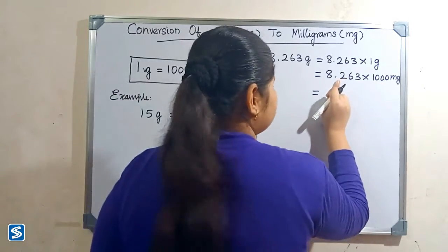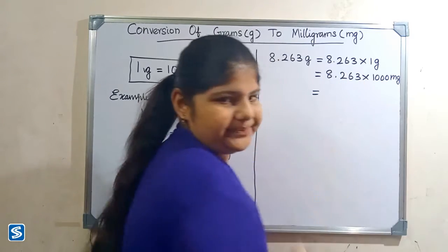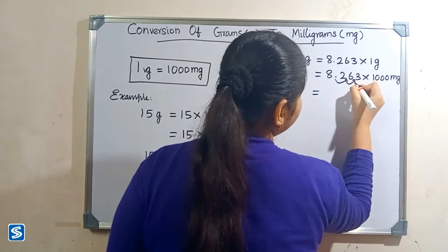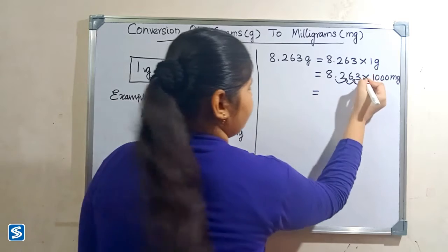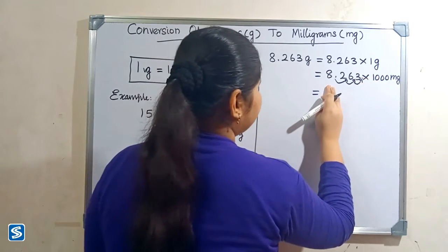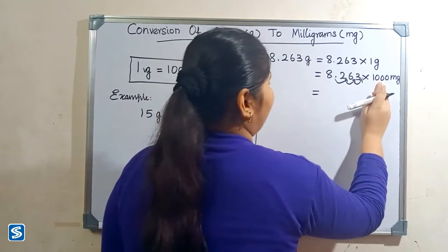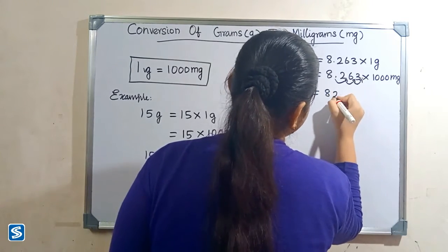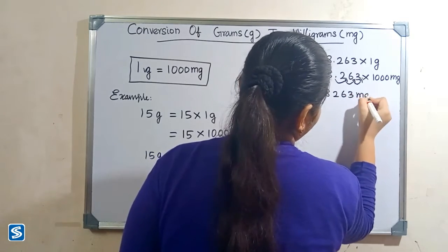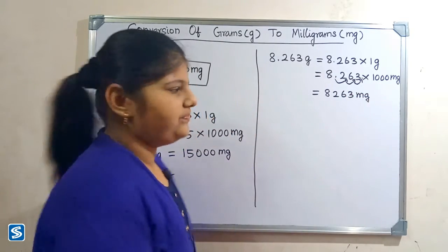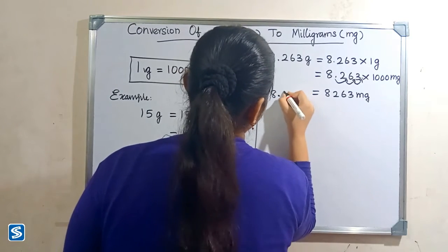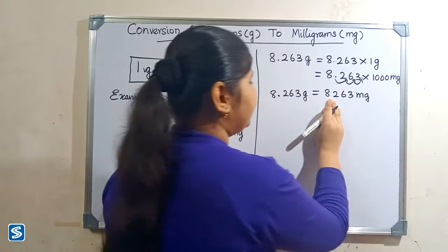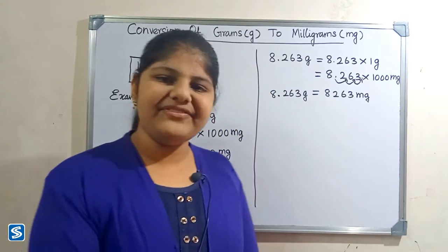to move the decimal point three places to the right — 1, 2, 3. So when we multiply 8.263 with 1000 milligrams, our answer will be 8263 milligrams. So 8.263 grams is equal to 8263 milligrams. Next we will take one more example.